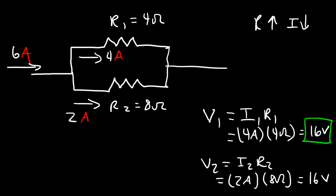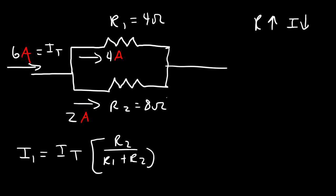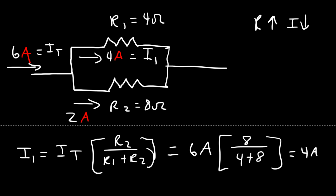To use a formula for a two-resistor circuit, I1 equals the total current multiplied by R2 divided by R1 plus R2. So I1 equals 6 amps times 8 ohms divided by (4 plus 8), which is 6 times 8 divided by 12, giving a current of 4 amps.